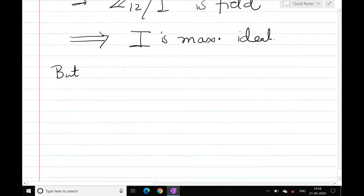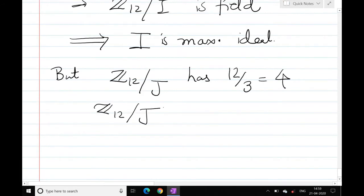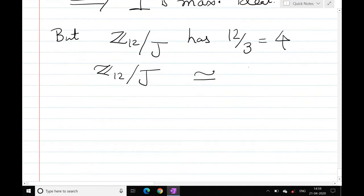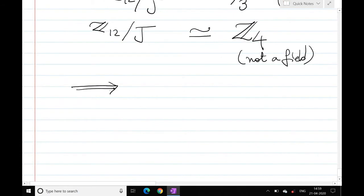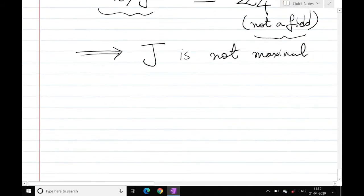But if I take Z12 by J, Z12 by J has 12 by 3 is 4 elements. So Z12 by J is not a field. So again by that theorem, if Z12 by J is not a field, then you can show that J is not maximal.